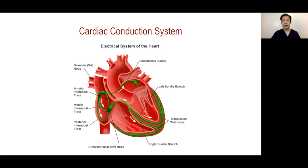The AV node also has specialized pacemaker cells, and it is the only electrical connection between the atria and the ventricles. Any other electrical connection connecting the atria and ventricles we term accessory pathways.